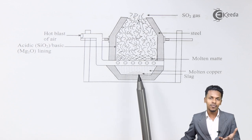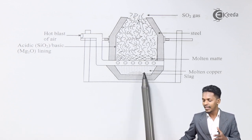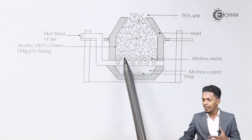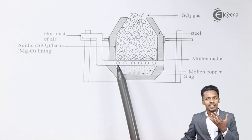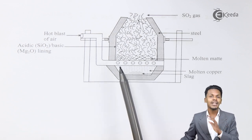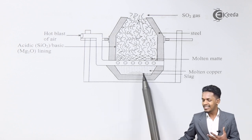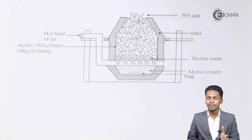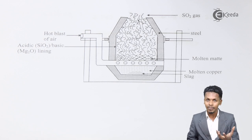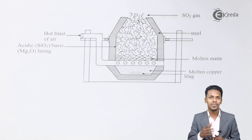However, the copper obtained at this stage is only about 98% pure. What we obtain here is molten matte, which is a mixture of Cu2+ and Fe+ ions derived from Cu2S. The molten copper is obtained and the remaining slag is removed. To further purify from 98% to 99.99% purity, we use an electrolytic method.